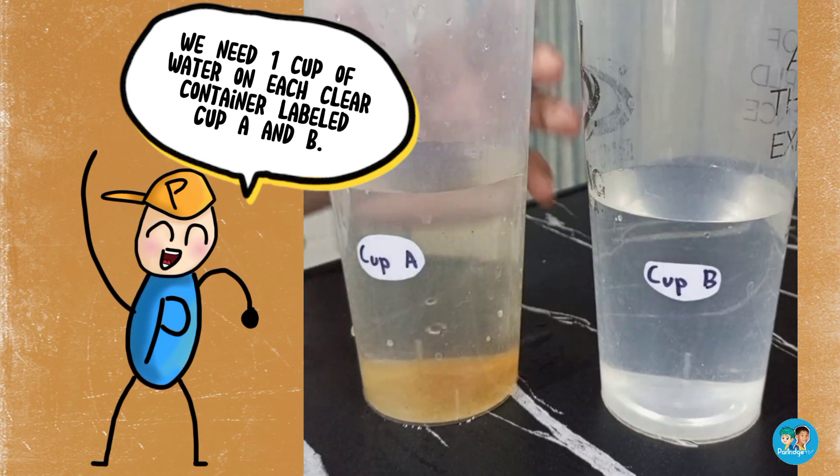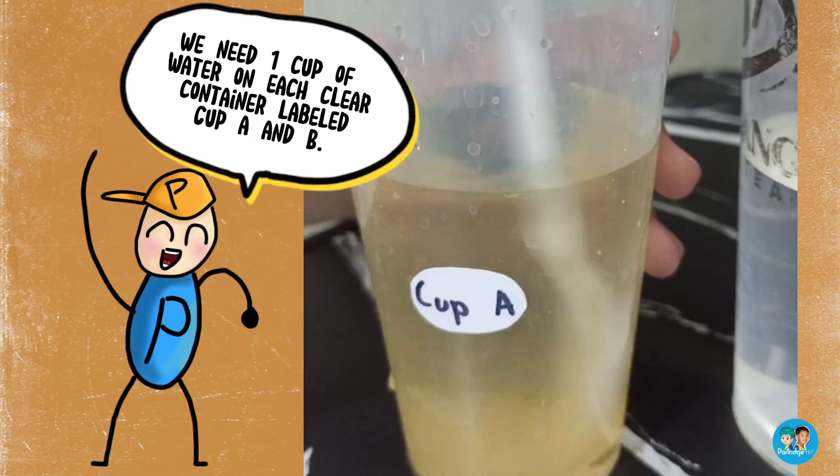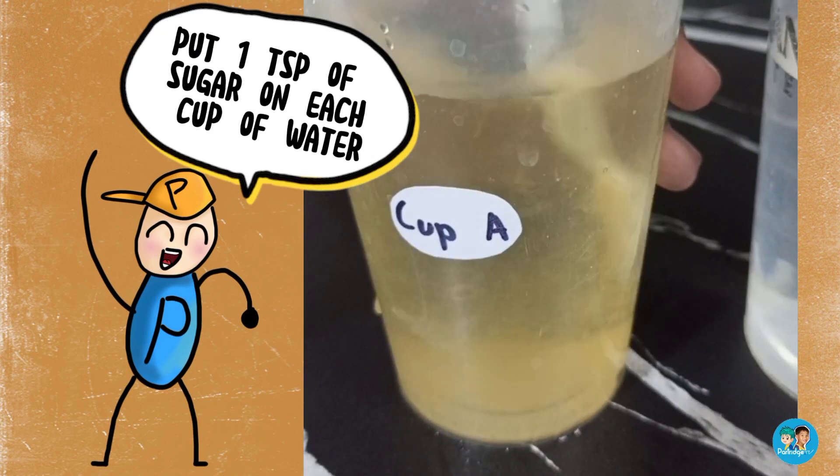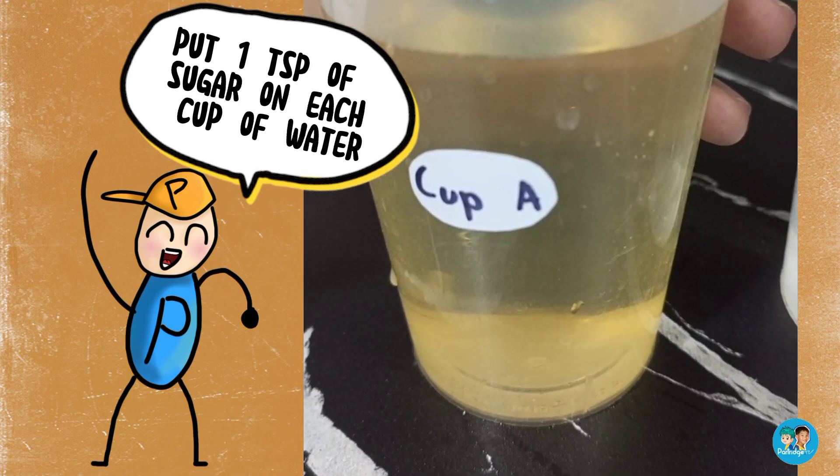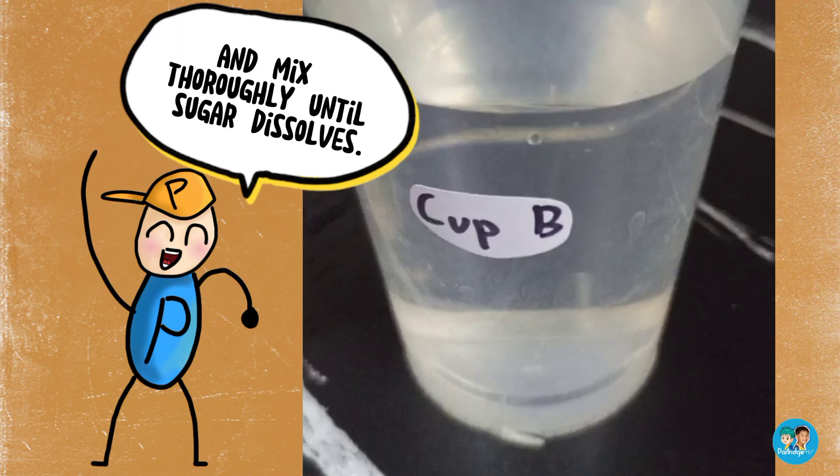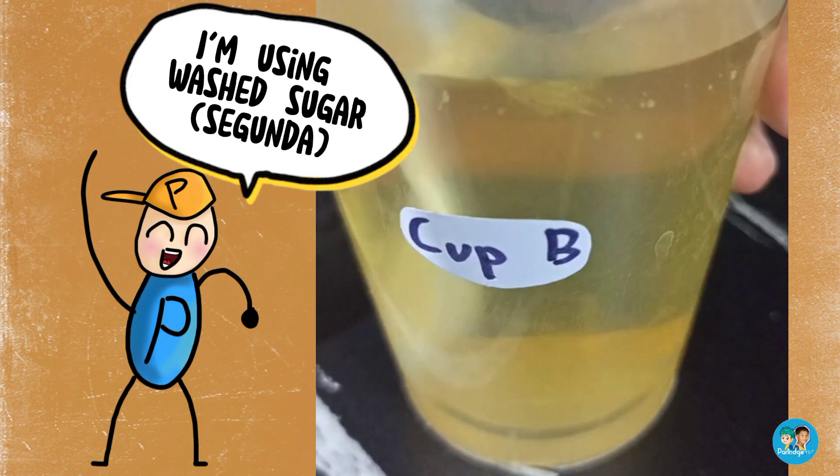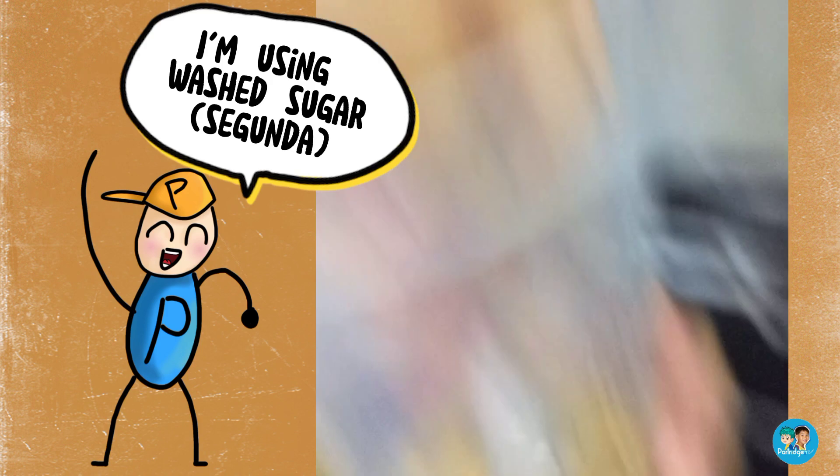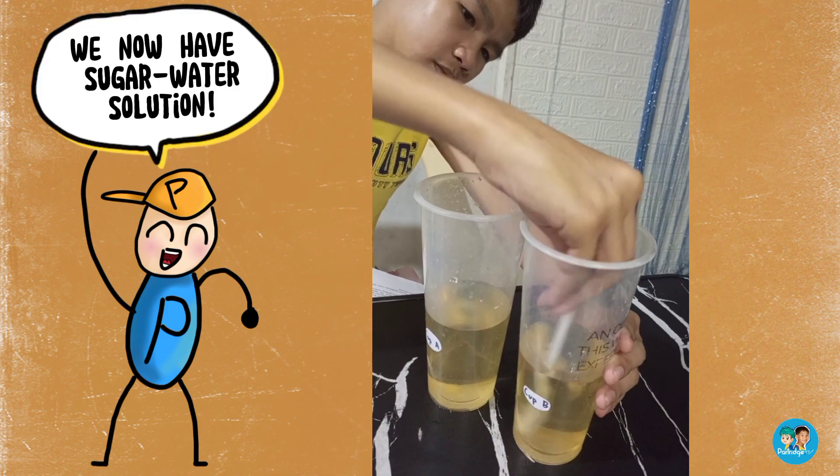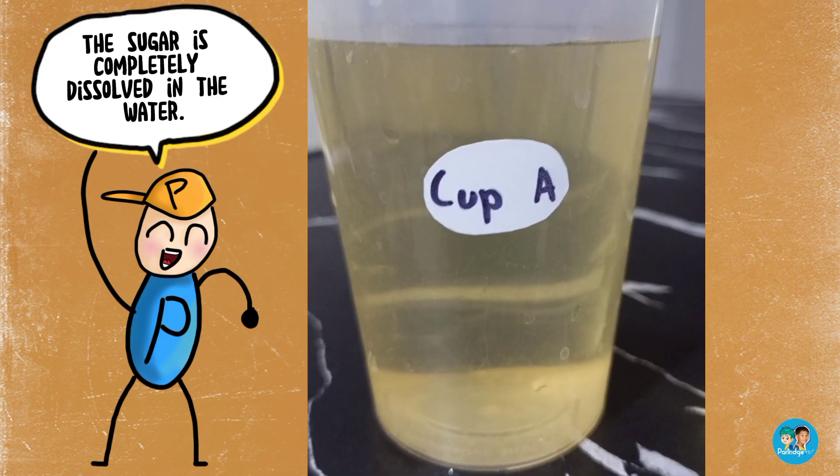We need 1 cup of water on each clear container labeled cup A and cup B. Put 1 teaspoon of sugar on each cup of water and mix thoroughly until sugar dissolves. It's fine to use either white or washed sugar. I'm using washed sugar.